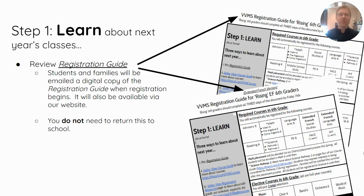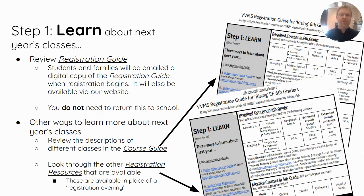The first place you should start is with the registration guide that you received in your fifth grade classroom, which was also emailed home to a parent or guardian. You do not need to return this piece of paper to school — it's simply yours as a reference point. You can use it to learn about your class offerings for next year by looking at our course guide with a link listed on the left-hand side of this document, as well as by reviewing our registration resources listed there.